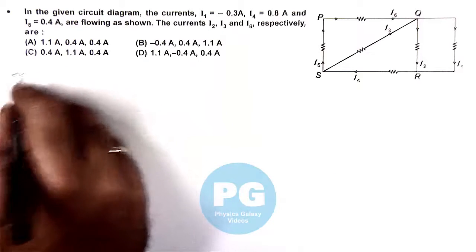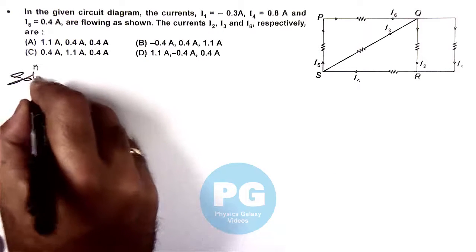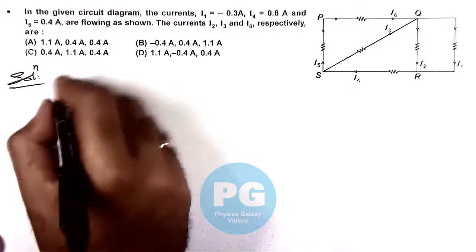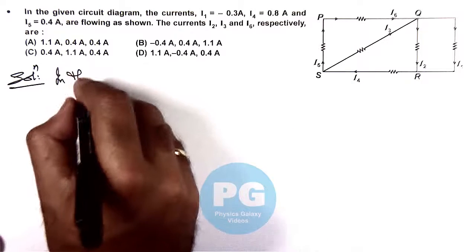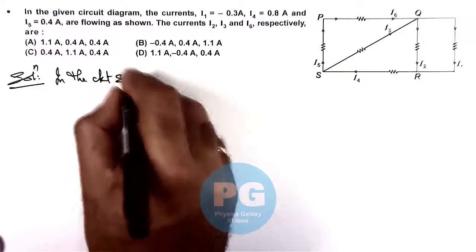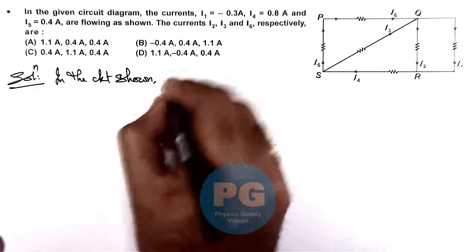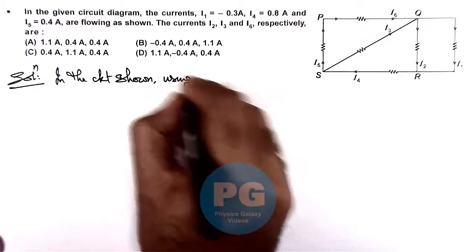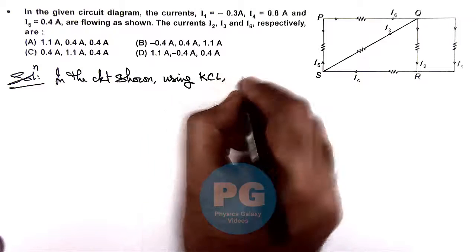This can be quickly obtained by using Kirchhoff's current law. Here we can write, in the circuit shown, using KCL we have: